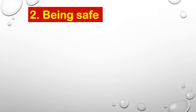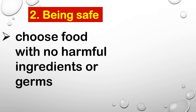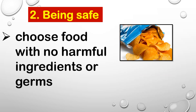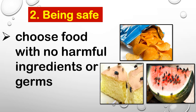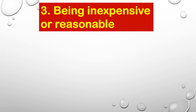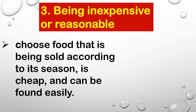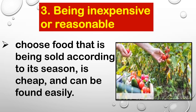Number two is being safe — choose food with no harmful ingredients or germs. For example, chips and foods that have flies are not healthy because they can cause stomach ache or diarrhea. Number three B is being inexpensive or reasonable. You need to choose food that is sold according to its season. For example, fruits and vegetables — they are cheap and can be found easily.